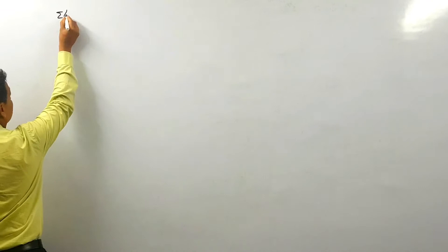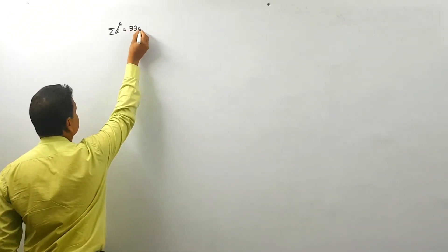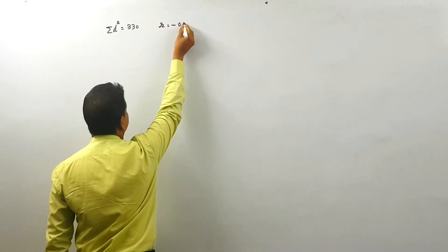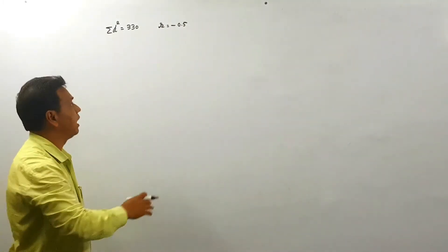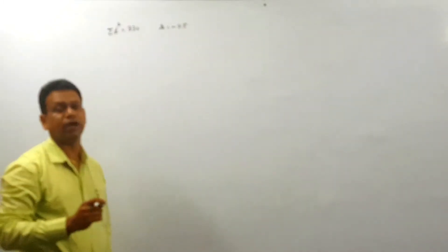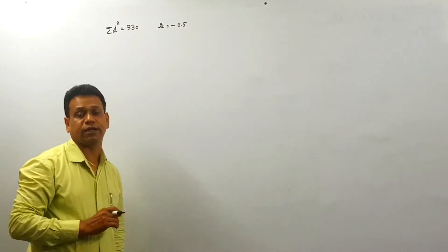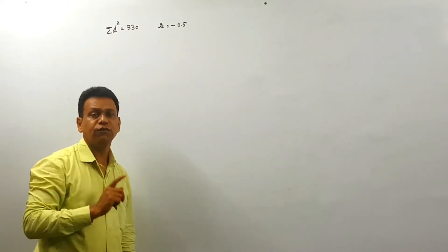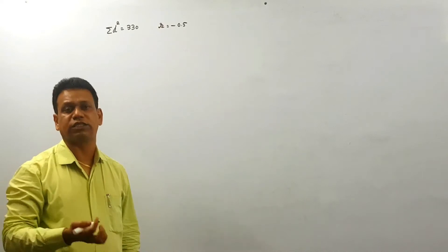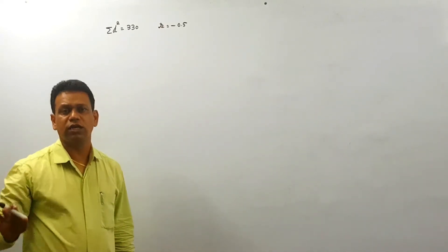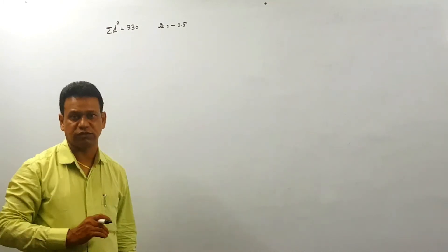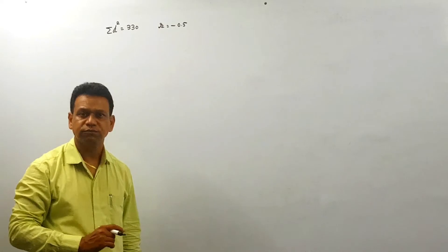In this question, they have given sum of d² = 330 — please pay attention on the board. The value of r is -0.5. We have to find out the number of pairs. There are two formulas: one without a correction factor and one with a correction factor. Since there is no clear instruction about any tie situation, we always use the formula without the correction factor.